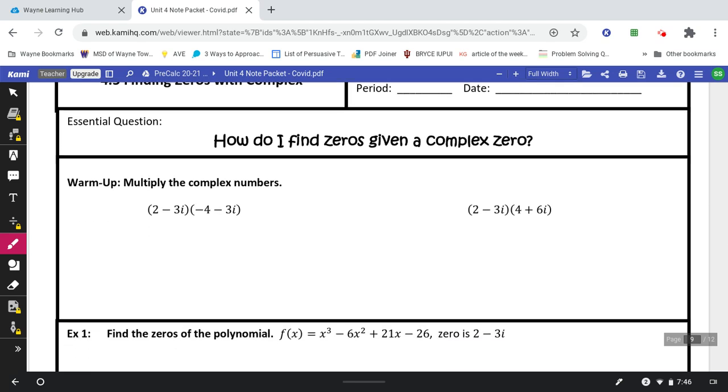So the first thing we're going to do on our warm-up is multiply two complex numbers together. You're going to be foiling this. When you work with i's, it's the same as working with x's. i squared, if you remember, is negative 1. So any time you see this i squared, we're going to replace it with a negative 1.